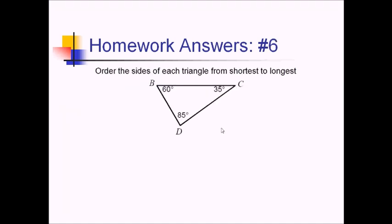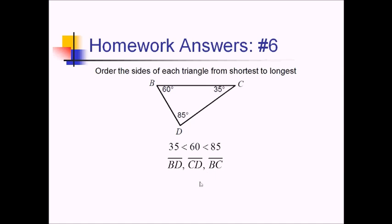For number six, we want to order the sides of the triangle from shortest to longest. We know that bigger sides are across from bigger angles. So I'm going to order the angles from smallest to largest and then go from there. We have 30, followed by 60, followed by 85. The shortest side will be across from the 35 degrees — that's the BD side — followed by DC across from 60, and then BC is the longest side because it's across from the largest angle.